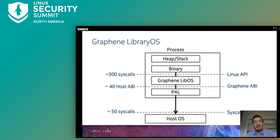Thank you, Anja, for the kind introduction. As already mentioned, Graphene is a library operating system that allows running an unmodified application inside an SGX enclave. Graphene is an open source, community-supported project currently in the process of transitioning from a research proof of concept to production-ready software.